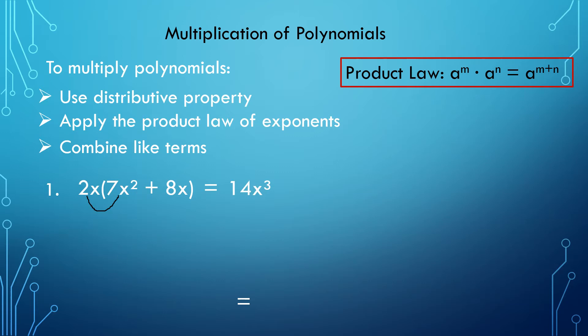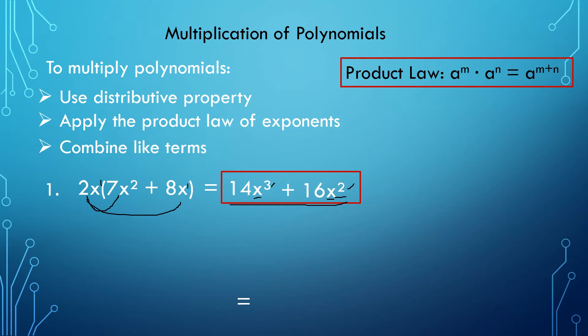Next, the second term. So 2x times 8x — that is 8 times 2, which is 16, plus 16x squared, since 1 plus 1 equals 2. Now look at this: they have the same variable x but different exponents — 3 and 2. So they are not like terms. The final answer stays as is; we cannot combine them.